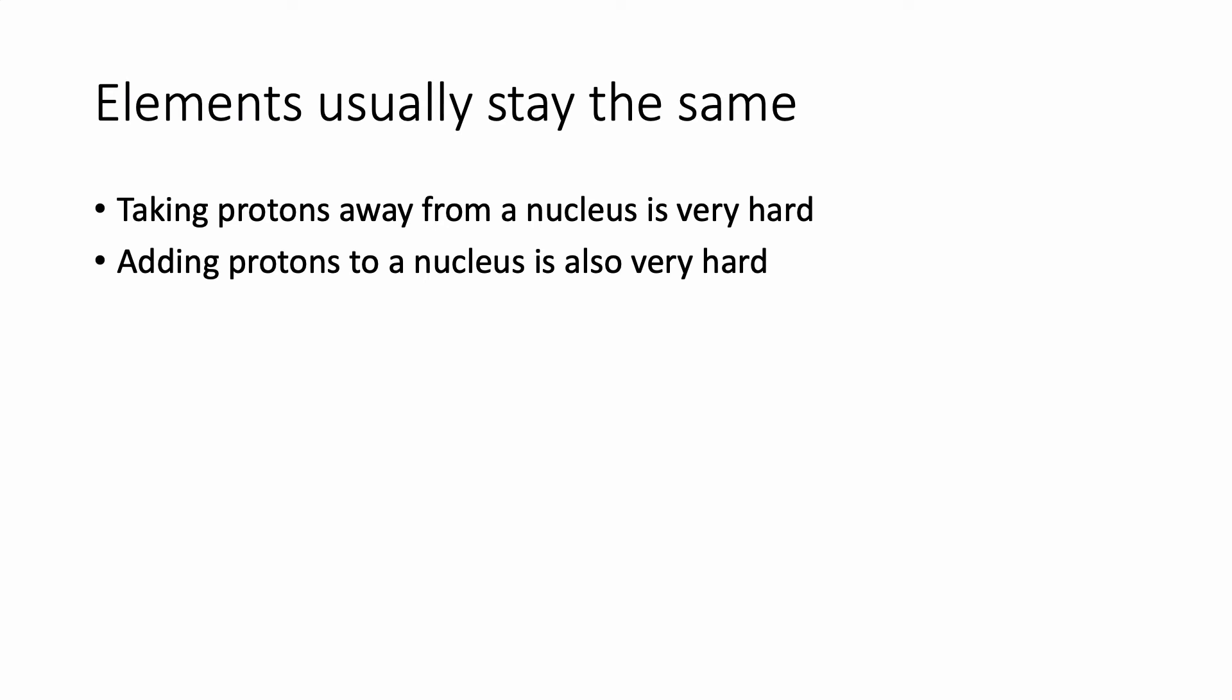Now one thing you should understand is that elements generally do not change into other elements. Elements usually stay the same. And the reason this is, is because in order to change an element from one to the other, you actually have to take away, or put on for that matter, protons from the nucleus. You would have to give the nucleus a smaller number of protons or give it a larger number of protons. And that's actually really hard. As a result, elements do not change to other elements, and this is basically why alchemists could never change gold into lead. Now you'll notice that I have an asterisk in here, and that asterisk I'm just going to say usually, because if you stick around until chapter 22 you'll see that elements sometimes do change to other elements.